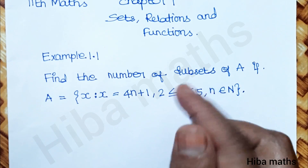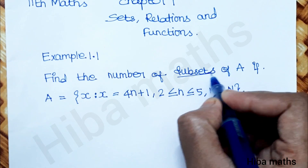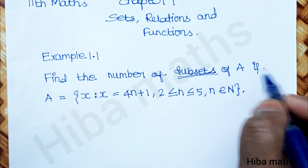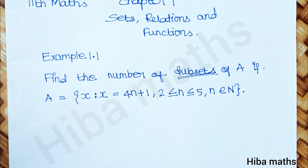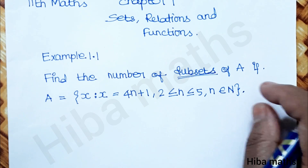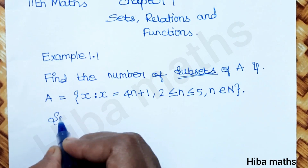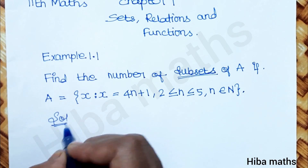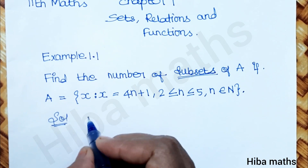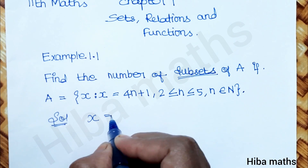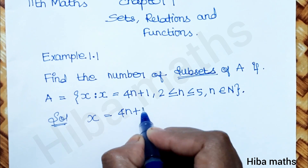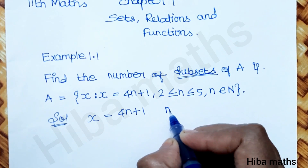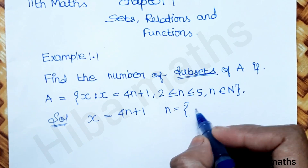We need to find the number of subsets. In the solution, given function x = 4n + 1, and n takes values from the given range.